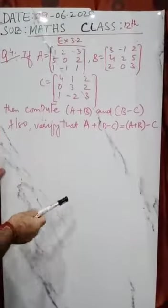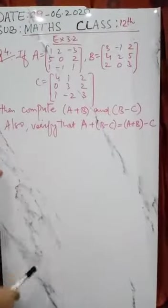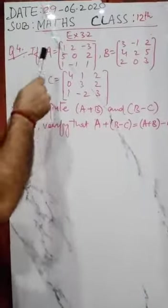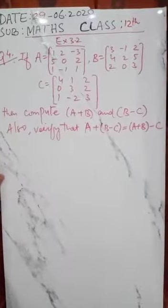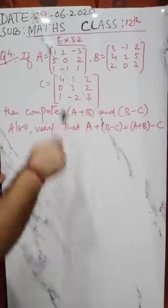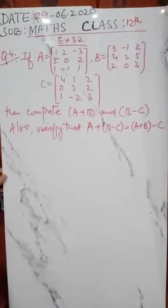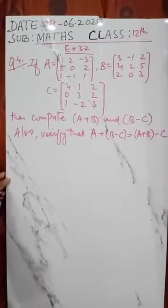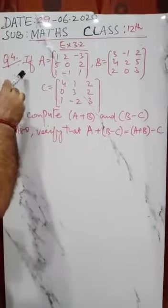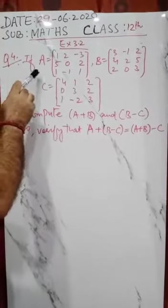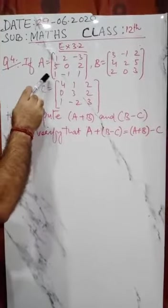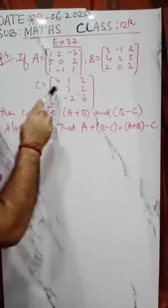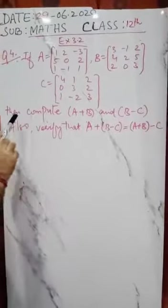Good morning students. This is question number four of exercise 3.2. Here we will solve this question. The matrix A is given, matrix B is also given and C is also given.